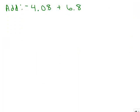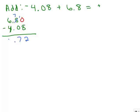We're adding a negative to a positive number. Which is bigger? Look at the whole number part — I have a negative 4 but a positive 6, so there are going to be more positives and the answer is going to be positive. Since we're adding different signs, we take their difference: the big number minus the smaller number, so 6.8 minus 4.08. Remember to put that zero in before you subtract. That gives me 2.72, which is a positive number.